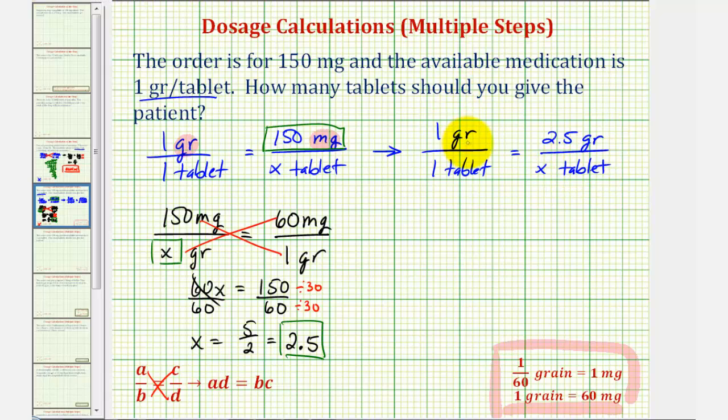And now because we have the same units on top and the same units on the bottom, we can cross multiply and solve for X.